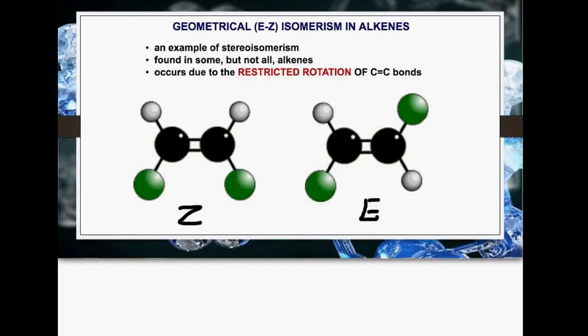The Z stands for Zusammen, which is the German word for together. In this you can see that the green atoms are both on the same side, they are together. Whereas in this E version, the green atoms are on opposite sides. We call this the E isomer, which stands for entgegen, which is for opposite.